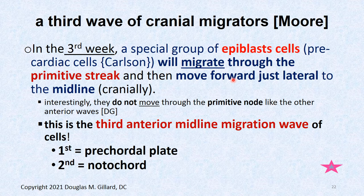Now let's talk about the anterior migrators. As the mesoderm is forming, epiblast cells dive through the primitive streak and primitive node. The first group formed the precordial plate, the second group formed the notochord, and now there's a third wave about week three. These are a special group of epiblast cells — what's strange is that unlike the others, they spare the primitive node. They go through the primitive streak through the caudal-middle and anterior portion of the streak, but not through the primitive node.